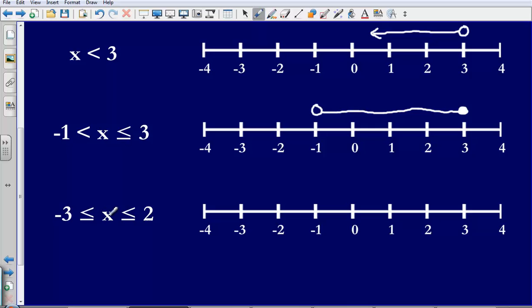Next we have x is greater than or equal to negative 3 but smaller than or equal to 2. So we are going to have colored in circles for both because it could be equal to either of these numbers and then we are just going to join those points with a line.